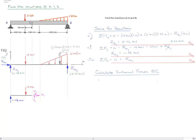So I'm just very quickly going to apply sum of the forces in the x direction equal to zero. And we see that the normal force at C is equal to zero.